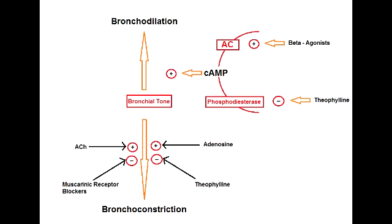The second thing theophylline does is inhibit adenosine. As shown in the picture on your screen, adenosine stimulation leads to bronchoconstriction. So by inhibiting adenosine, theophylline leads to bronchodilation.